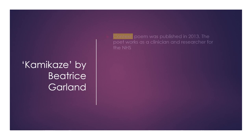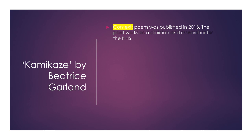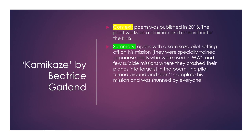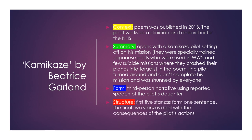Kamikaze by Beatrice Garland. The poem was published in 2013 and the poet works as a clinician and researcher for the NHS. The poem opens with a kamikaze pilot setting off on his mission. Kamikaze pilots were specially trained Japanese pilots used in World War Two who flew suicide missions, crashing their planes into targets. In the poem, the pilot turns around and doesn't complete his mission and is shunned by everyone. The form is a third person narrative using reported speech of the pilot's daughter. The first five stanzas form one sentence, and the final two stanzas deal with the consequences of the pilot's actions.